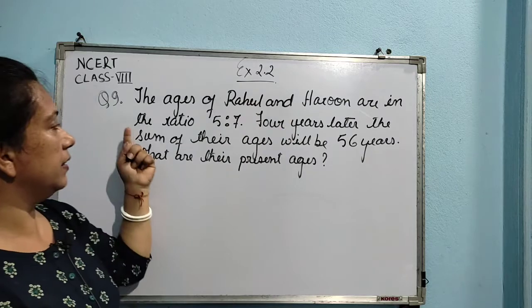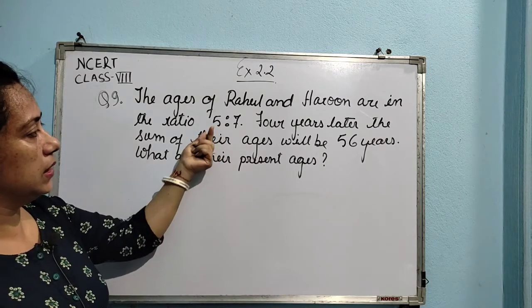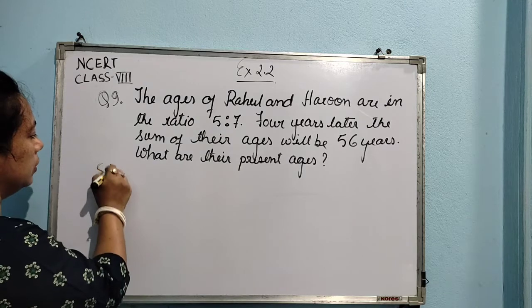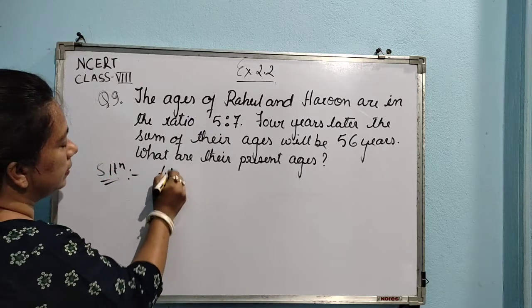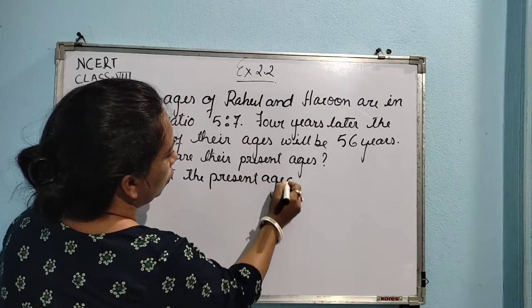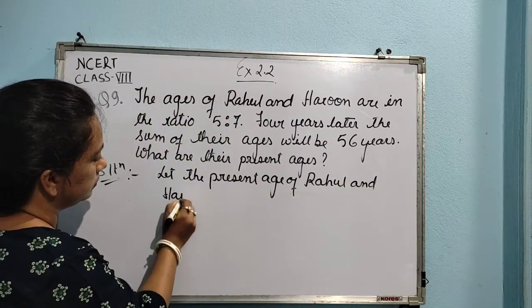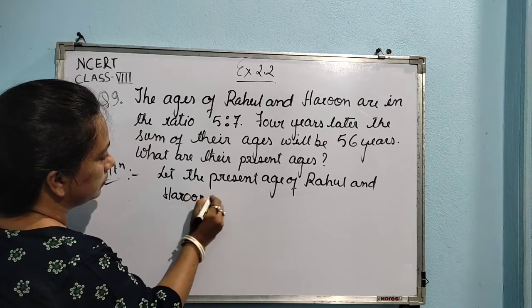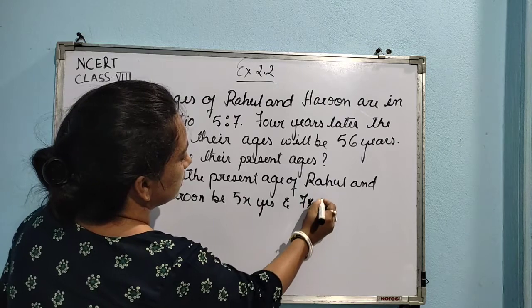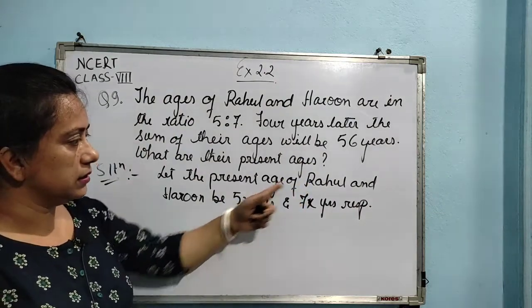We have two boys, Rahul and Haroon, and their ratio of ages is given as 5 is to 7. When a ratio is given, we can consider the two quantities to be multiples of that particular ratio. So let the present age of Rahul and Haroon be 5x years and 7x years respectively.